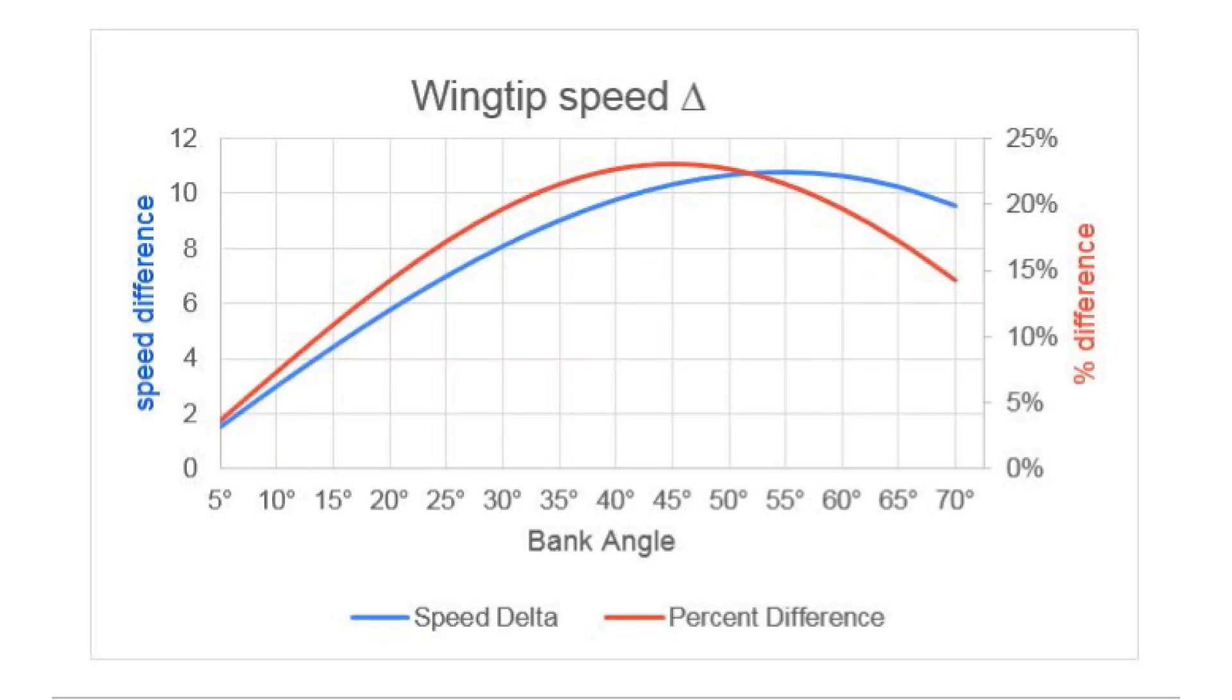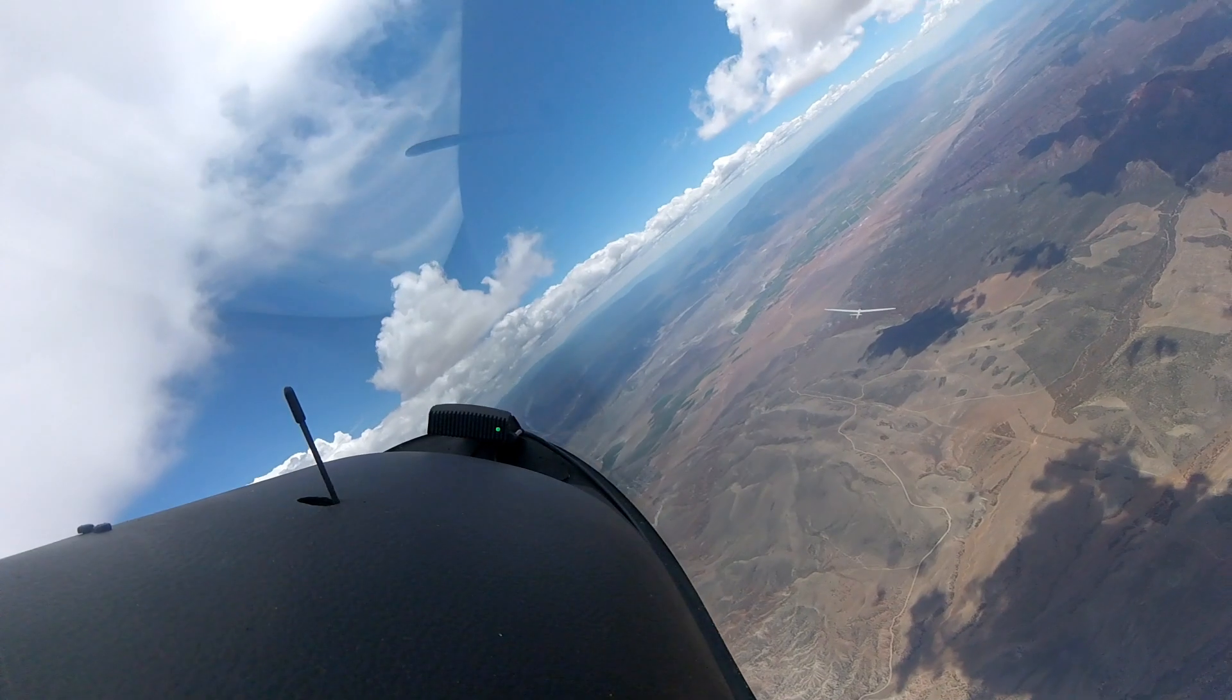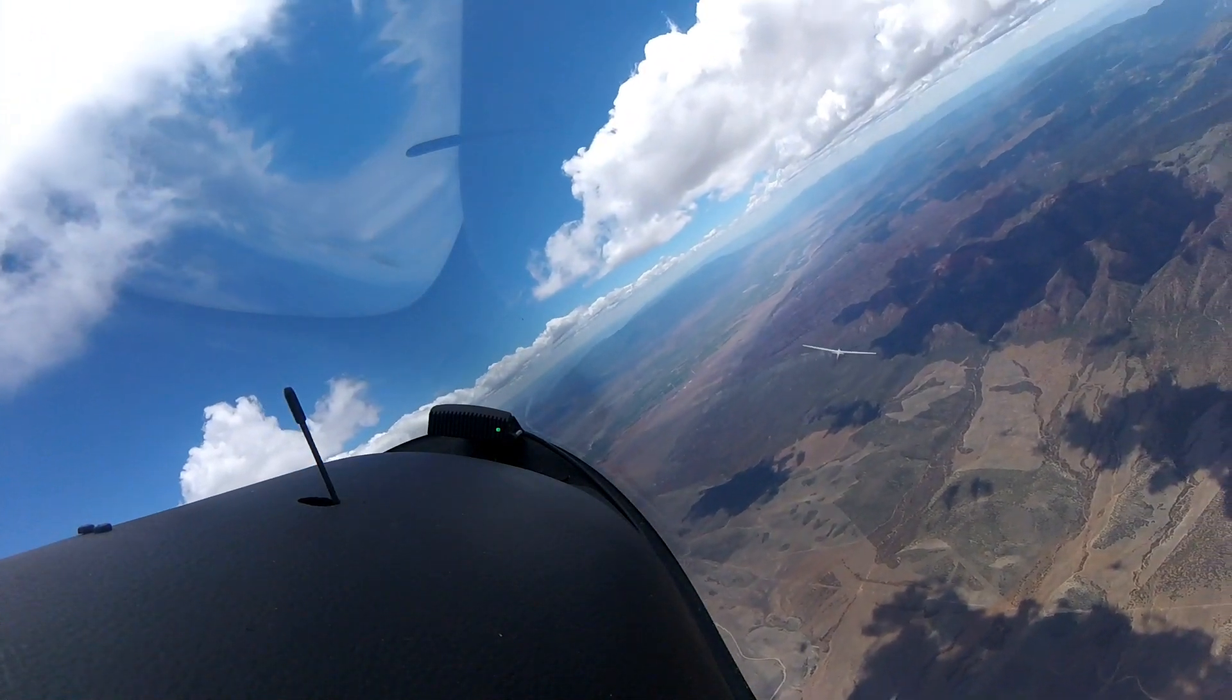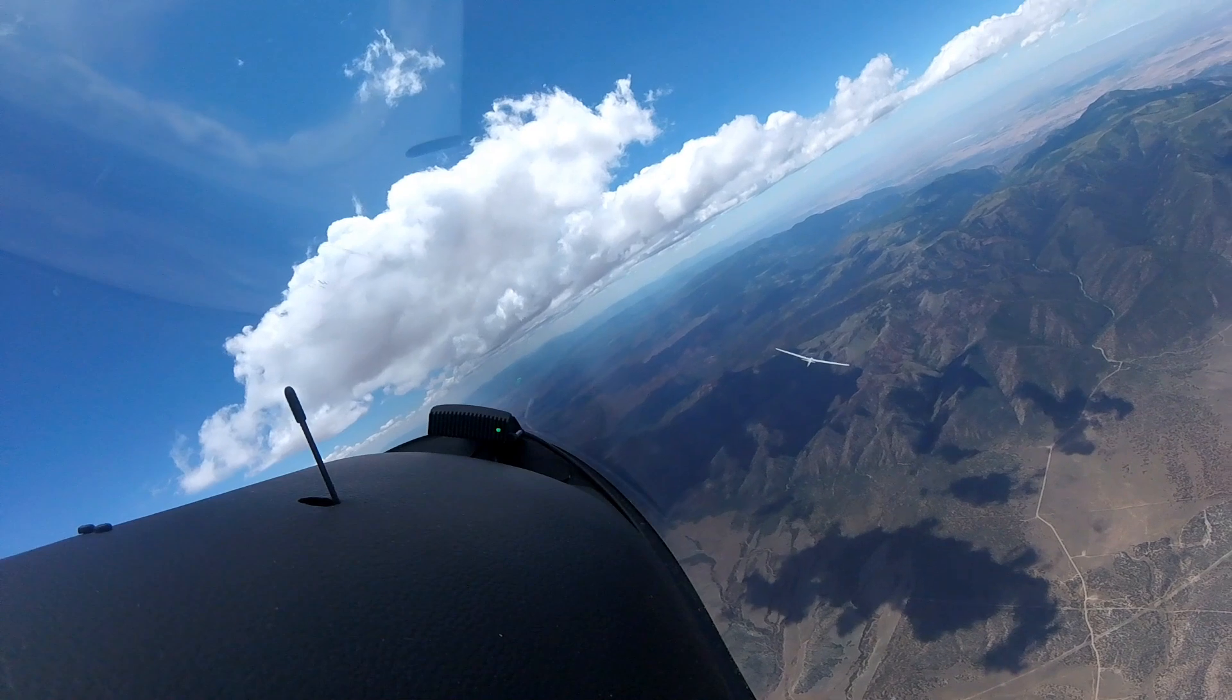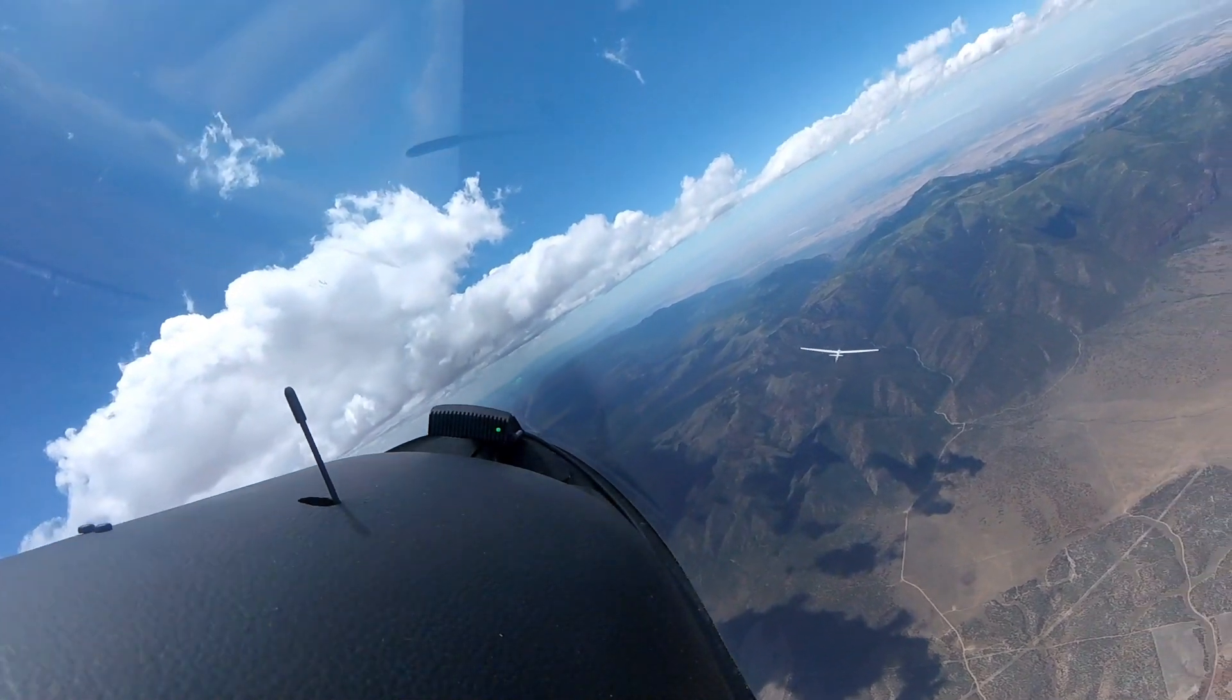In another example, as we make a steep turn and tighten the bank angle up to 45 degrees, the outer wing tip is going faster than the inner wing tip, maybe 10 knots faster. But that small speed difference adds up to more lift and drag on the outer wing, forcing us to cross control in those tight turns to avoid an ever-increasing bank angle.